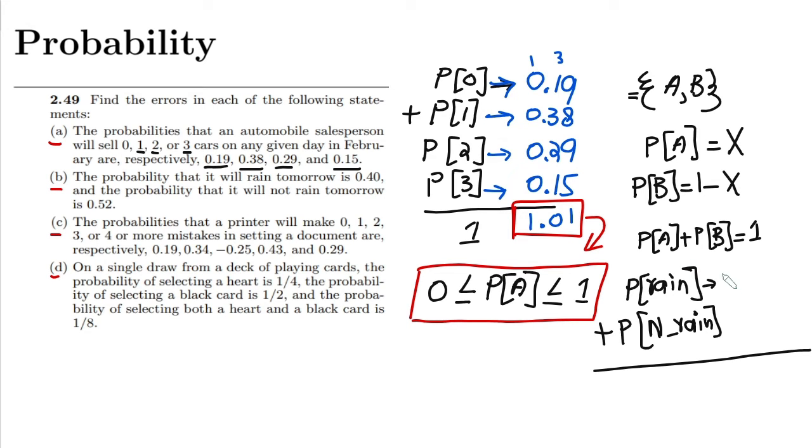This is 0.40 and this is 0.52. Here I will get 0.92, which is incorrect because it must be equal to 1 due to this statement. That is the incorrect statement.